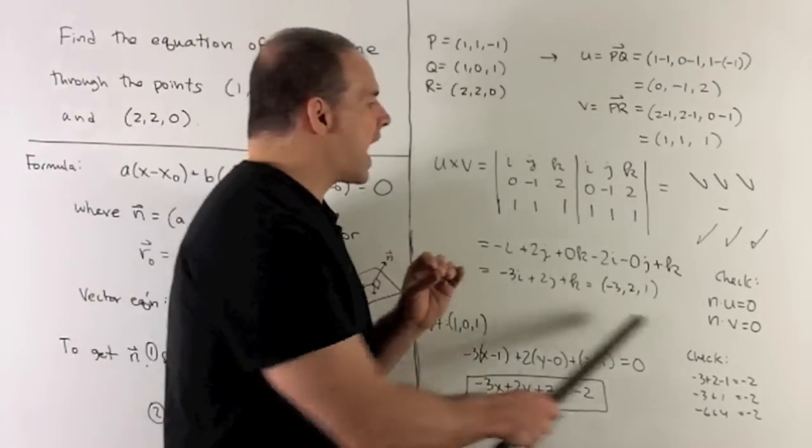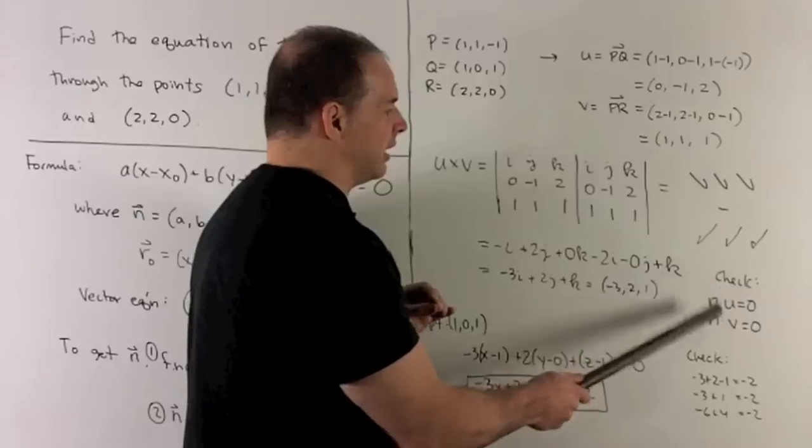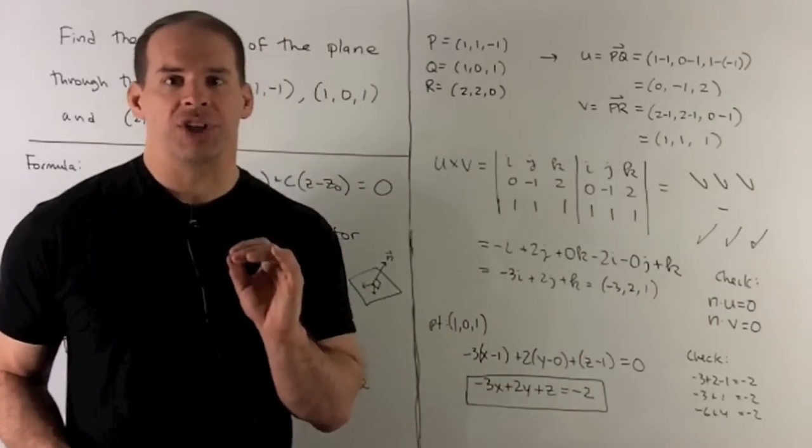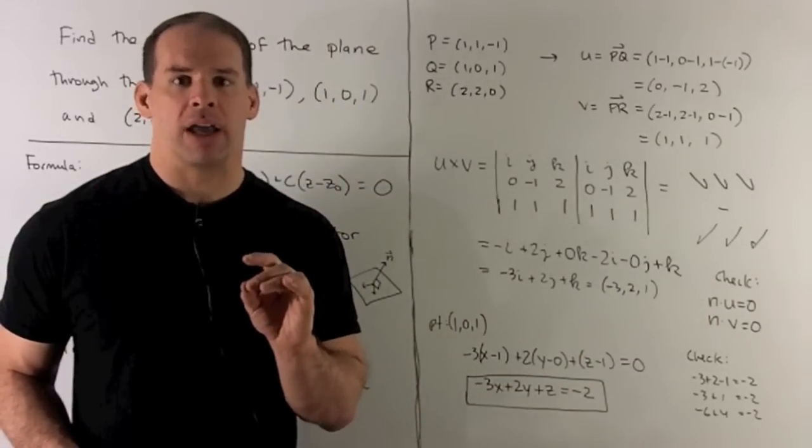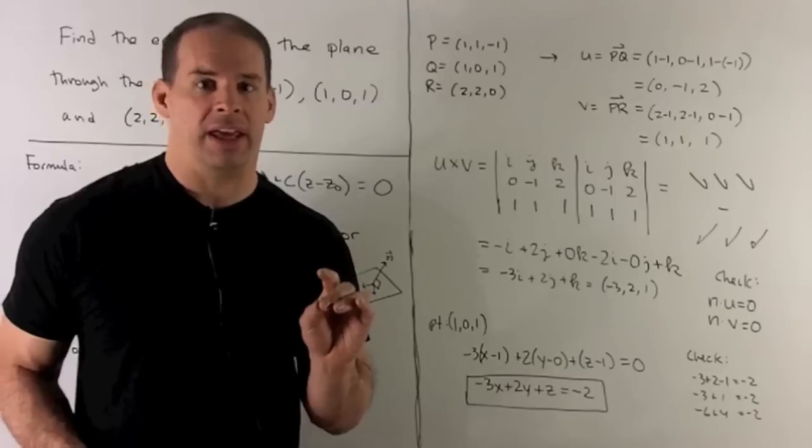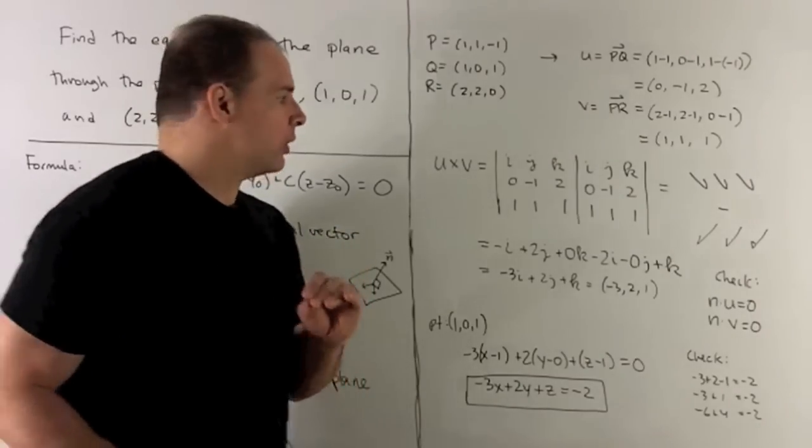Now, I would want to check that this thing is indeed perpendicular to my two directions. So I take the dot product N · U and N · V, and I see that I get zero. So for instance,